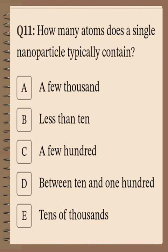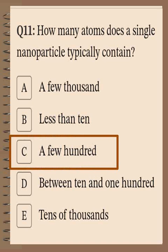Question number eleven: How many atoms does a single nanoparticle typically contain? The choices are: few thousand, less than 10, few hundred, between 10 and 100, or tens of thousands. A single nanoparticle typically contains a few hundred atoms, meaning roughly 1 to 100, consistent with the nano scale definition.